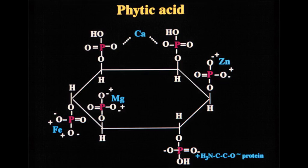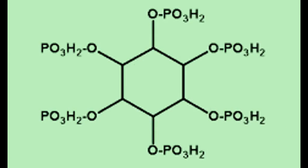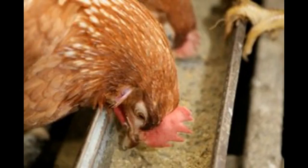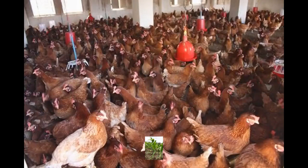Phytic acid, known as inositol hexaphosphate, is the principal storage form of phosphorus in many plant tissues, especially bran and seeds. Phytate is not digestible to humans or non-ruminant animals, so it is not a source of either inositol or phosphate if eaten directly. Phosphorus and inositol in phytate form are not in general bioavailable to non-ruminant animals because these animals lack the digestive enzyme phytase required to remove phosphate from the inositol in the phytate molecule.